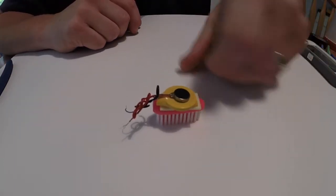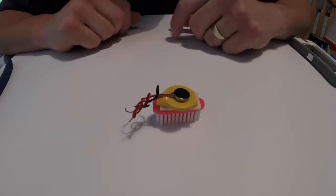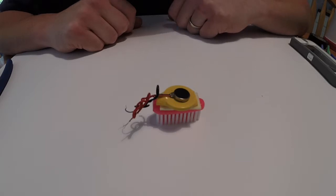What can you do to start to tweak this brush bot to make it go straight, or to make it spin really fast, or make it go in a circle? That's what I want you to think about, and that's the next phase to consider with your brush bot.